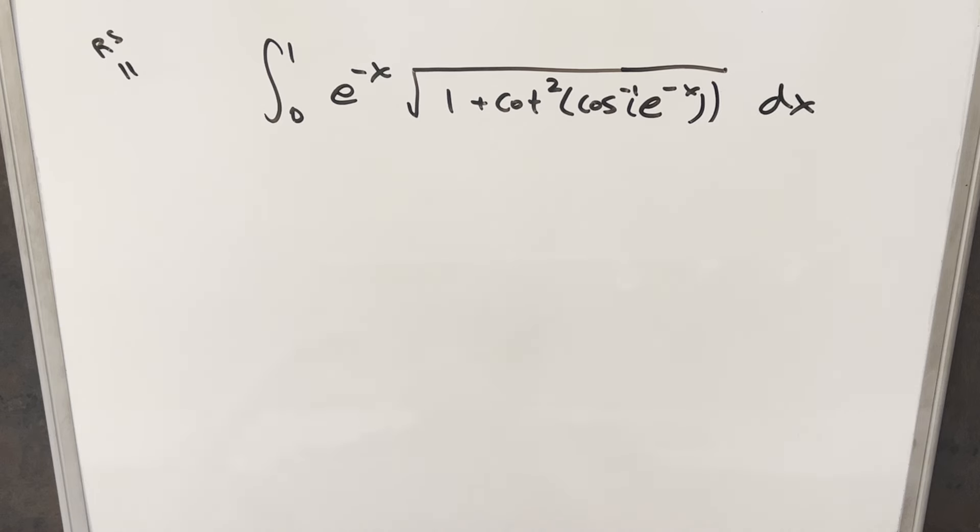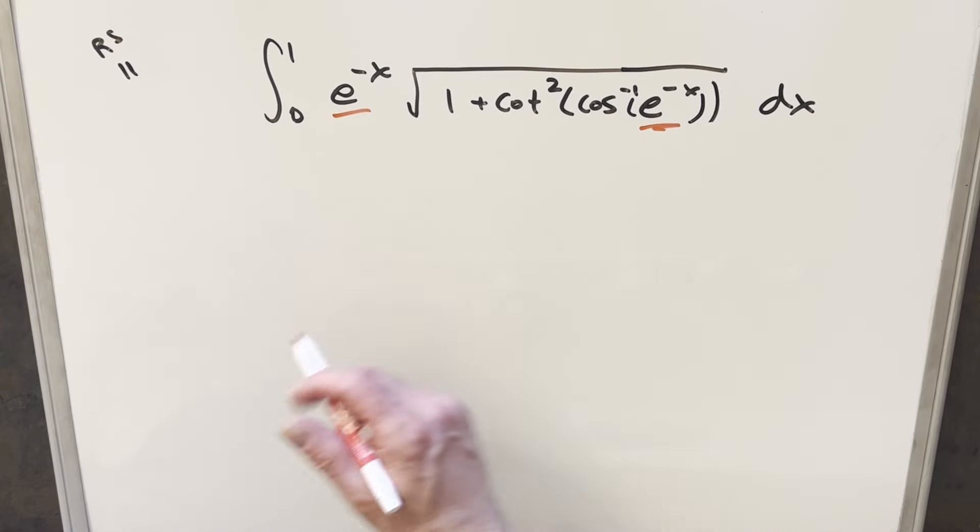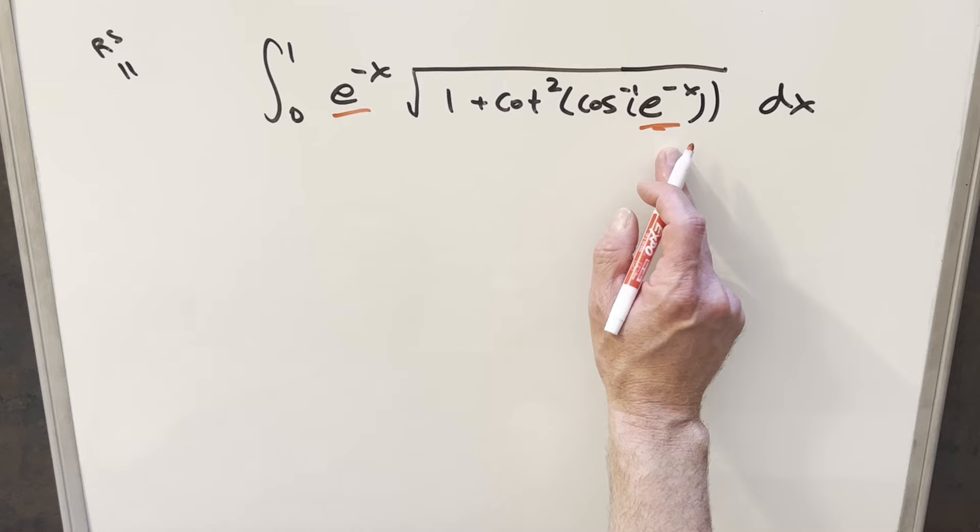When I first started looking at this, it seemed pretty impossible. And then I started noticing some things. First of all, we have this e to the minus x in common here and here, which makes me think a u substitution might be a possibility.